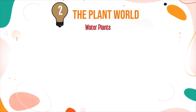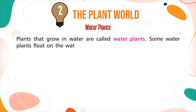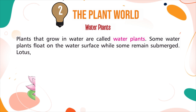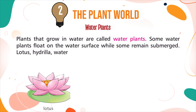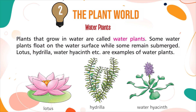Plants that grow in water are called water plants. Some water plants float on the water surface while some remain submerged. Lotus, Hydrella, water hyacinth, etc. are examples of water plants.